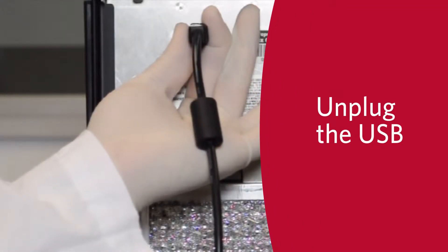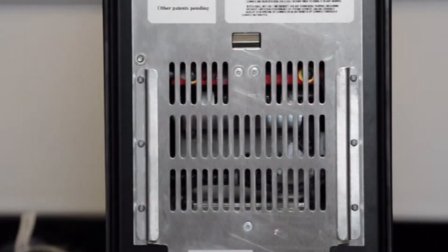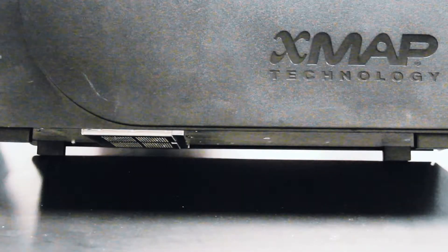First, unplug the USB cable from the back of the instrument and slide the back filter up out of its holder. Next, lift the MagPix to expose the bottom of the instrument.